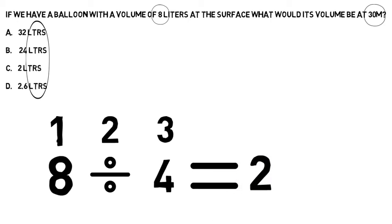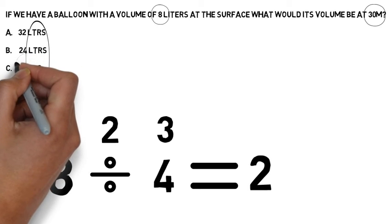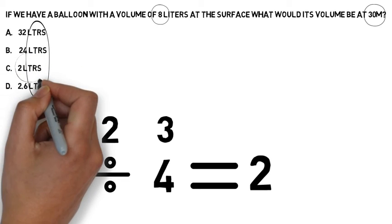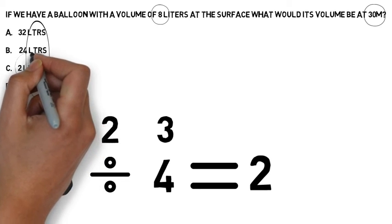8 divided by 4 equals 2. So the answer is C, 2 litres.